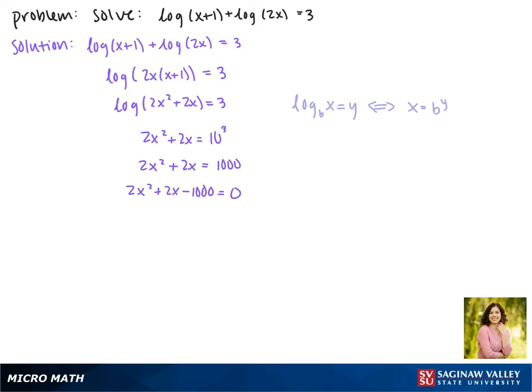Since everything here has a factor of 2, dividing both sides by 2 gives us x² + x - 500 = 0. Since this can't be factored, we're going to use the quadratic formula.